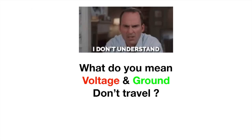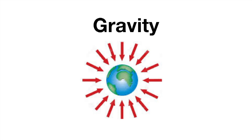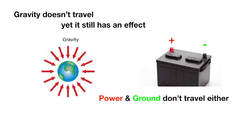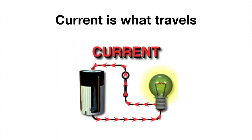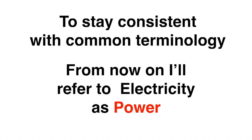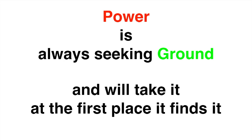Now you may be asking then, what do you mean voltage and ground don't travel? Well let's go back to our illustration of gravity which we know is perfect. Gravity doesn't travel but yet it is still there. Power and ground don't travel either and yet they still have an effect. Current is what travels. From now on I'm going to refer to electricity as power to stay consistent with our common terminology. Power is always seeking ground and it will take it at the first place it finds it right or wrong. It never comes in second.